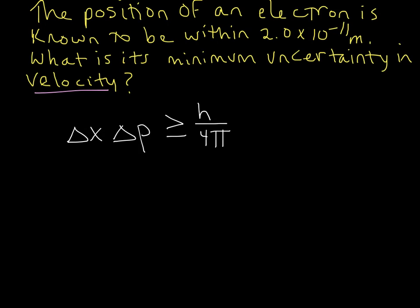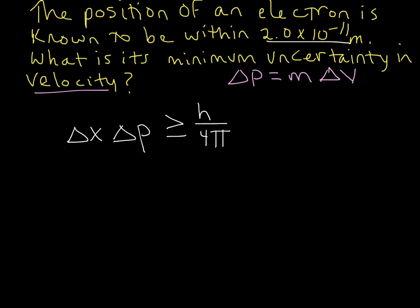We are given the uncertainty in X in this problem — we have the range that X is known to be in — and we're asked for the uncertainty in velocity. Since uncertainty in velocity doesn't appear directly in the equation, what we use is: uncertainty in momentum equals mass times uncertainty in velocity. The uncertainty in mass is zero, so the uncertainty in momentum comes from the uncertainty in velocity. That's how we'll get there.